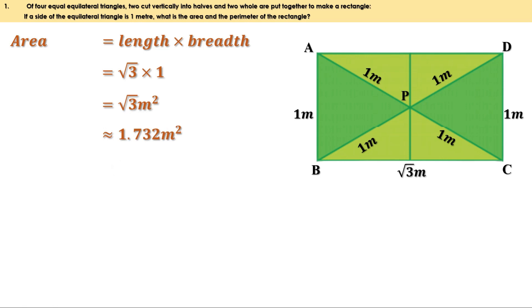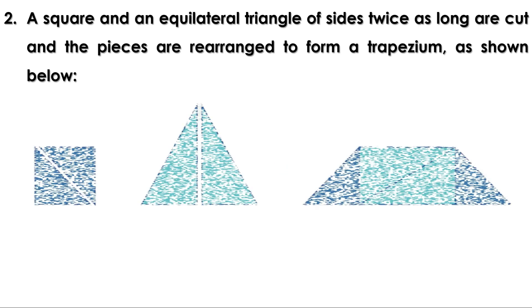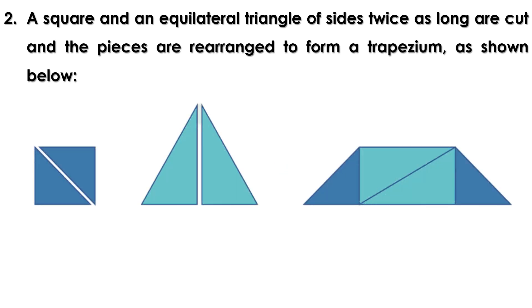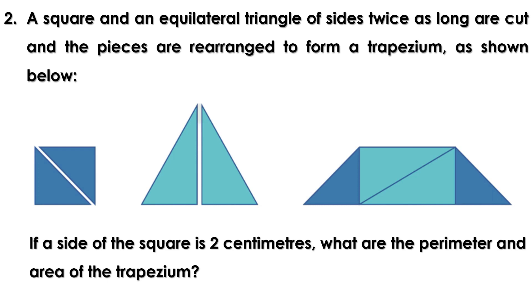Now let us do the remaining problems on page 57 and 58. A square and an equilateral triangle with sides twice as long are cut and the pieces are rearranged to form a trapezium as shown. If a side of the square is 2 centimeters, what are the perimeter and area of this trapezium? The square has sides 2 centimeters, the equilateral triangle has sides twice that, and they are rearranged to form the trapezium. We have to find the perimeter and area.